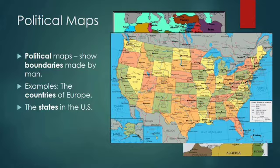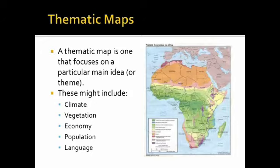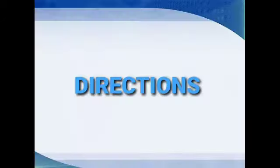The next map is the thematic map. A thematic map shows a theme, such as the network of roads in a city or a country. We also use other maps like those that depict the network of railways and airways.